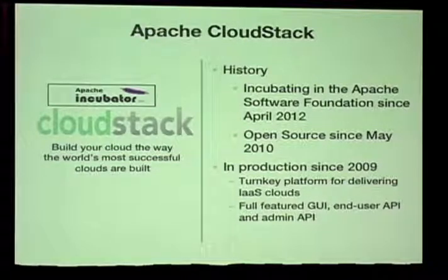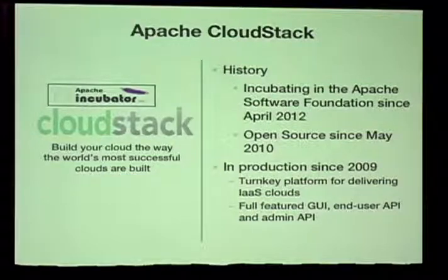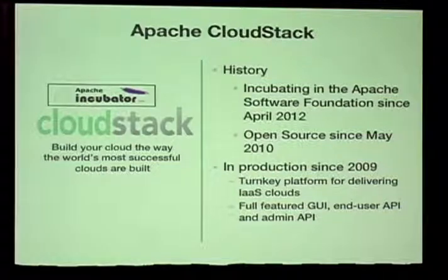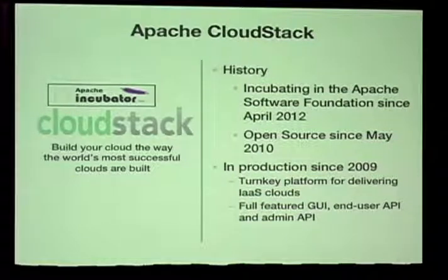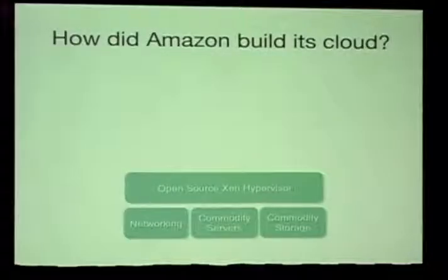CloudStack has been incubating in the Apache Foundation since April last year, but it's actually been open source longer than that and in production since 2009 — fairly solid and mature. When you're building out a cloud, the big player is Amazon. They start off with commodity servers, add commodity networking, add commodity storage, and use the open source Xen hypervisor to stitch together these components.